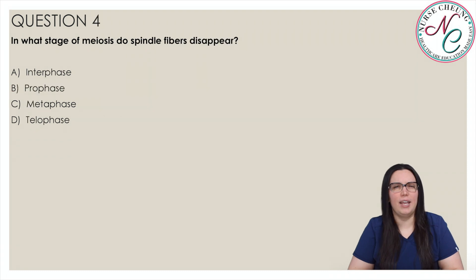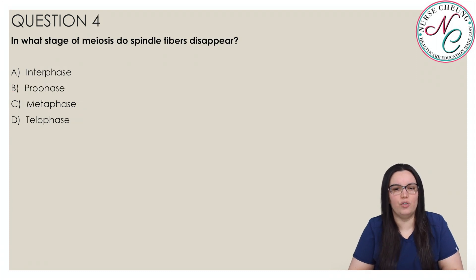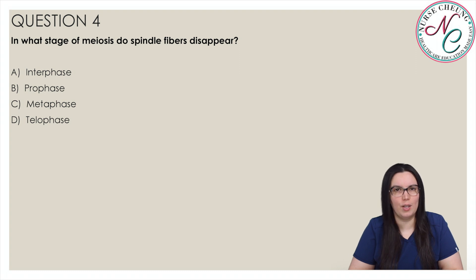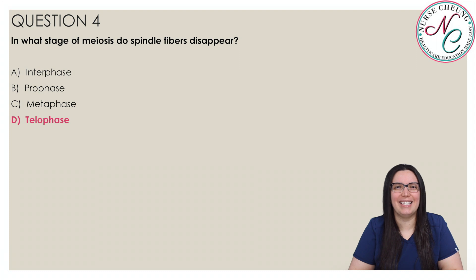In what stage of meiosis do spindle fibers disappear? Is it A, interphase; B, prophase; C, metaphase; or D, telophase? The correct answer is D, telophase.